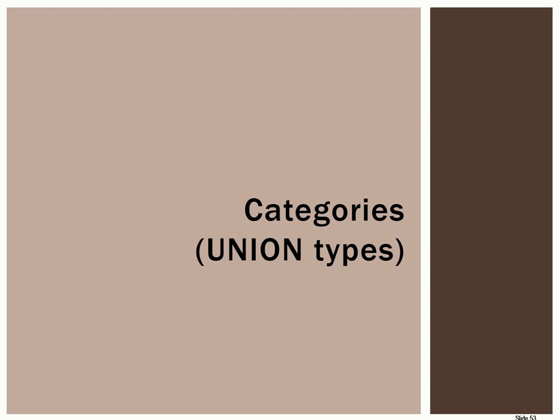We have seen examples of subclasses that were either disjoint or overlapping from a single superclass. But now it's time to turn our attention to categories or union types. This is when an entity type has more than one superclass.